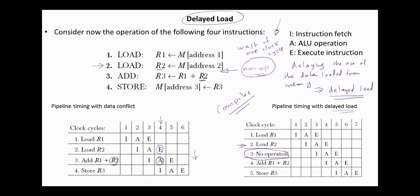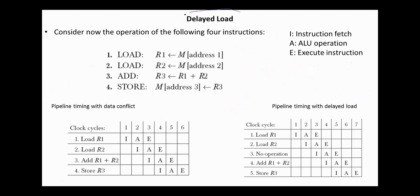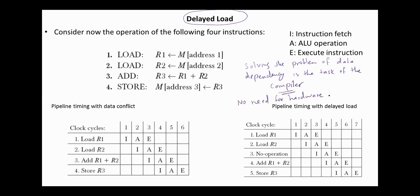The compiler can avoid this waste if it can find one useful instruction to insert after the load operation. For example, if after instruction 3 there is an instruction to increment R6, then that instruction can be placed after the load and before the add operation that uses register R2. The main advantage of delayed load is that solving the problem of data dependency is the task of the compiler, and therefore no hardware circuits are needed to check if the register value is valid.